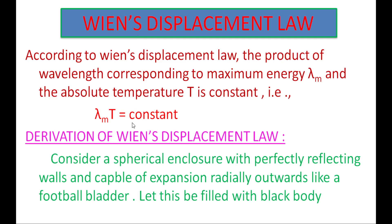Now we will discuss the derivation of Wien's Displacement Law. Consider an enclosure with perfectly reflecting walls. The walls have the property to expand slightly — like a football when you pump air into it, the wall expands. When we consider this enclosure, we can fill it with radiation inside, and the walls perfectly reflect the radiation.